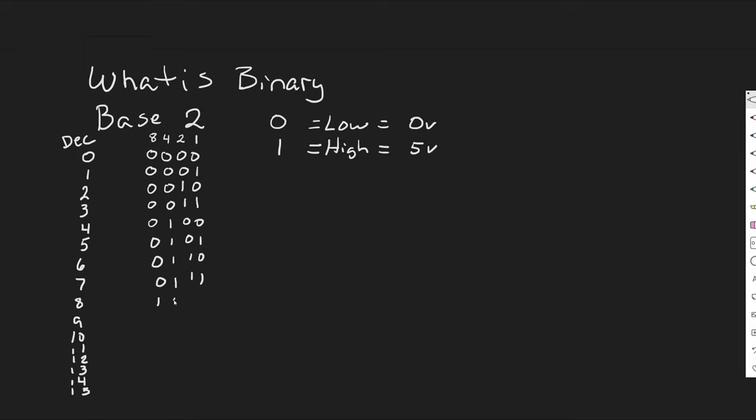Eight: 1000. Nine: 1001. Ten: 1010. Eleven: 1011. Twelve... something's not right, this is supposed to be a zero. So 12 is 1100, 13 is 1101, 14 is 1110, and 15 is all ones.